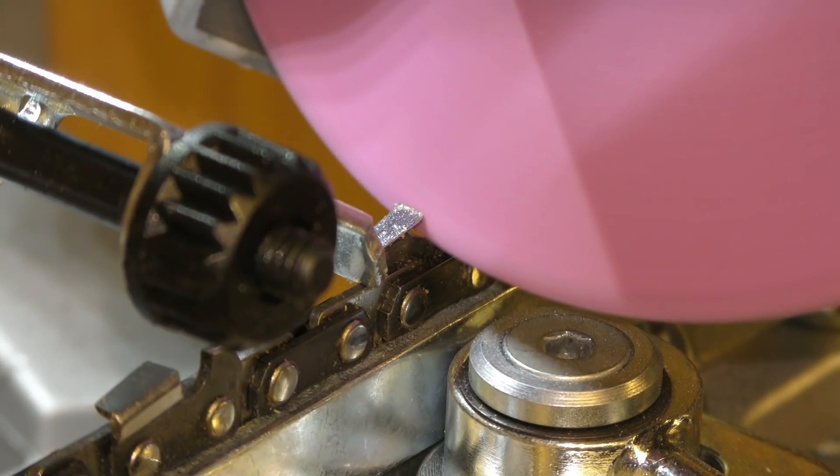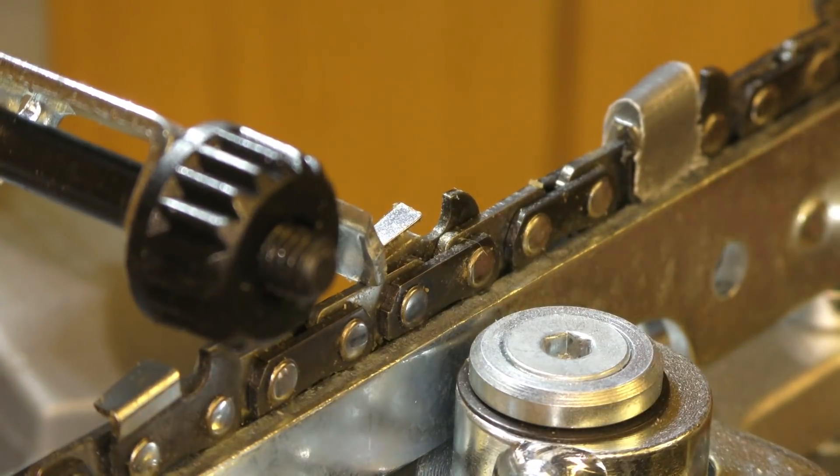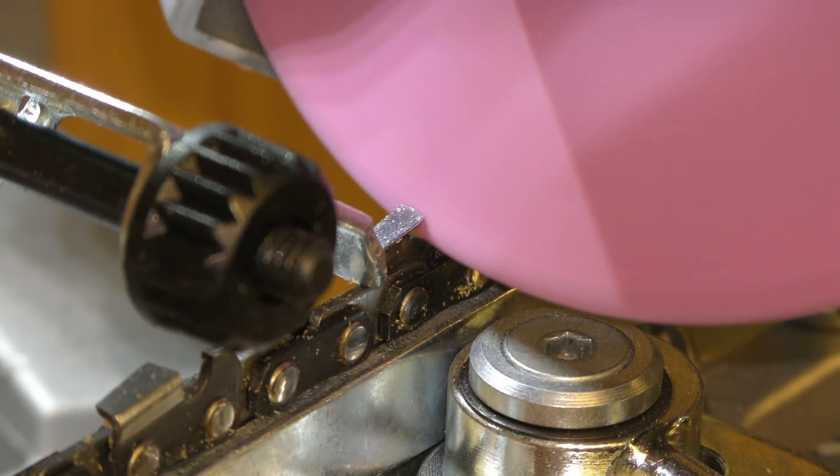We grind one cutting tooth and then we jump over one. That's because the tooth that we are jumping over should be at a negative 10 degrees.